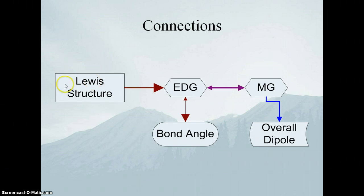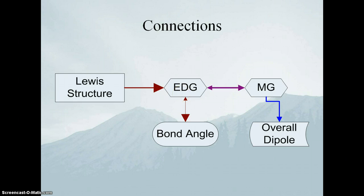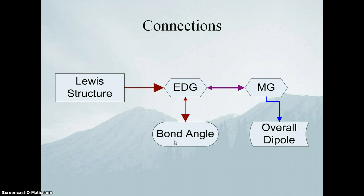When we started talking about structures we started with our Lewis structure, and once our Lewis structure was determined we could look at the number of groups of electrons and determine our electron domain geometry. From our electron domain geometry, comparing the number of bonds and lone pairs, we could figure out our molecular geometry. Out of the electron domain geometry also came our initial bond angles, then lone pairs tweak those bond angles, but ostensibly bond angles came from the electron domain geometry.